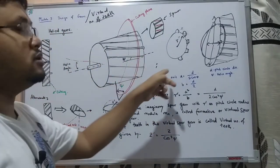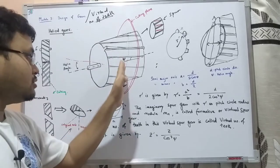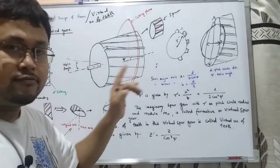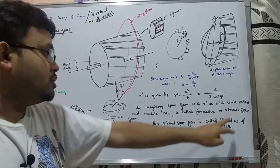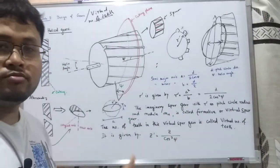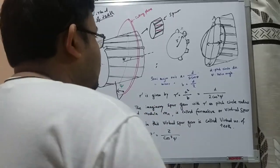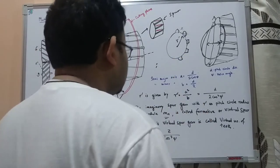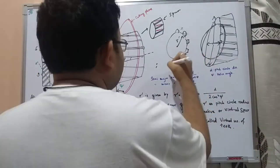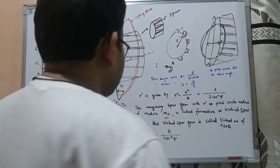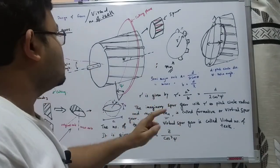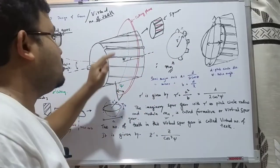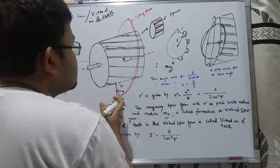This is all imaginary — we don't actually cut the helical gear. We just imagine cutting at this angle, obtaining the ellipse, and then converting it to a circle. That is why we call it the virtual spur gear or formative spur gear — both names are used. Since we've modified the gear, the module is also modified; we use the normal module here.